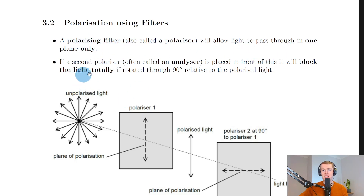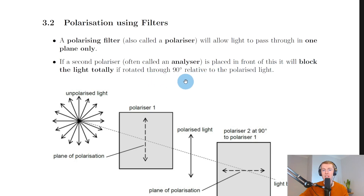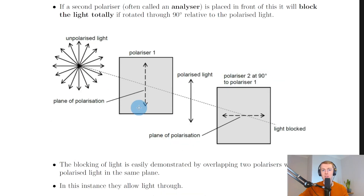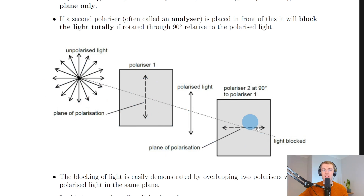Then it says if a second polarizer, often called an analyzer, is placed in front of this, it will block the light totally if rotated through 90 degrees relative to the polarized light. Here you'll see our setup of two polarizers, where the first one we call a polarizer and the second one we call an analyzer.